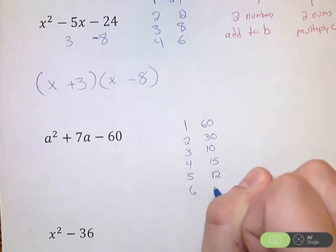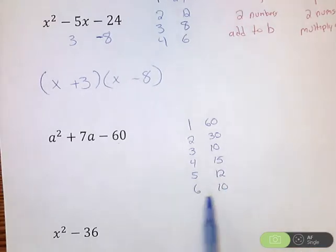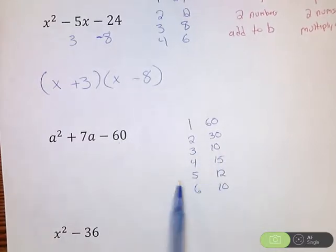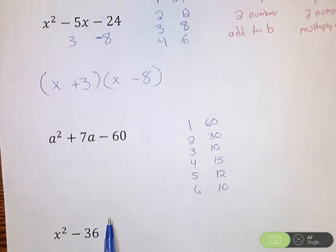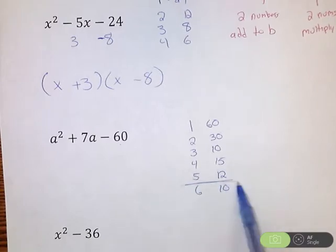So I'm looking for which of those pairs can I get to multiply to 60 and all these multiply to 60, but it also somehow have a combination of the two numbers to get a positive 7. What I'm looking at is this 5 and 12 here.